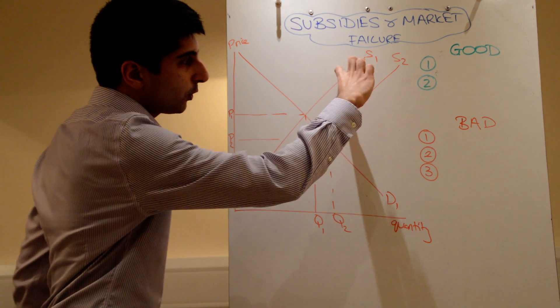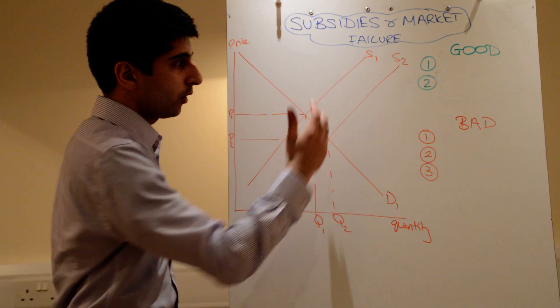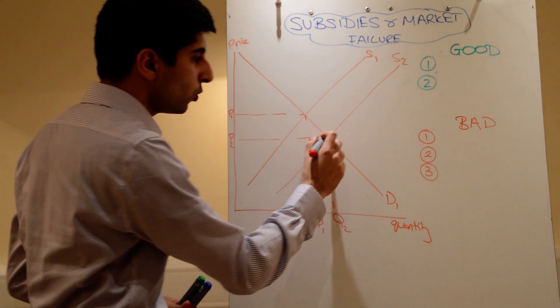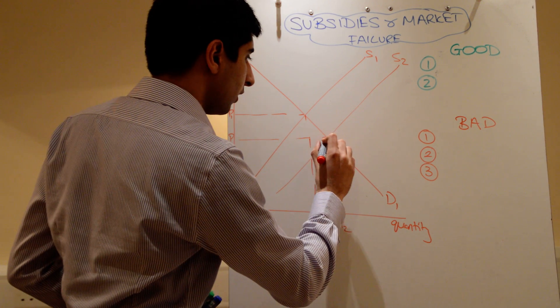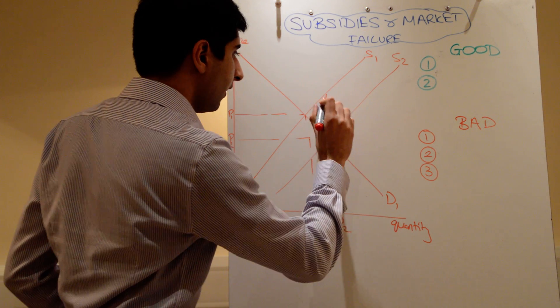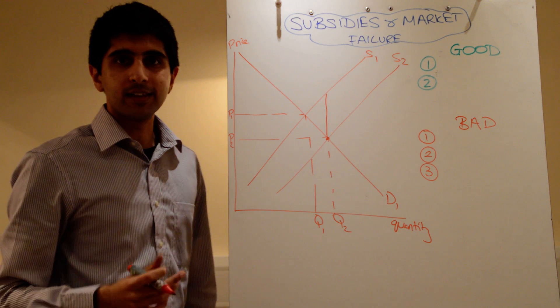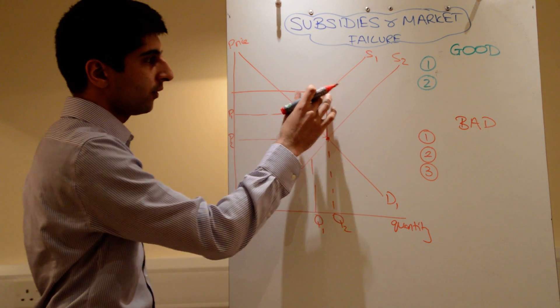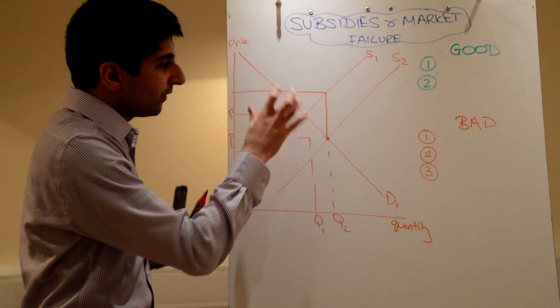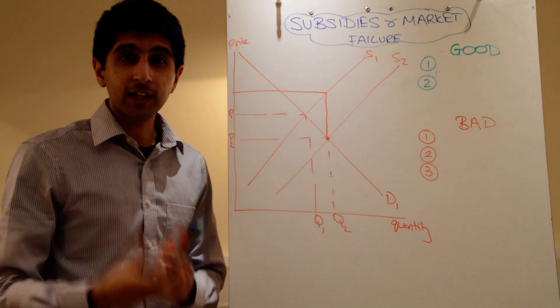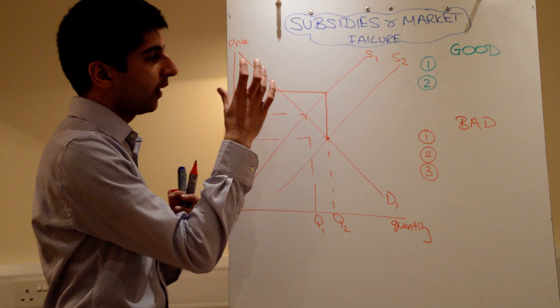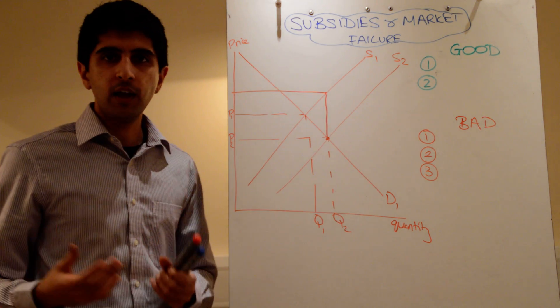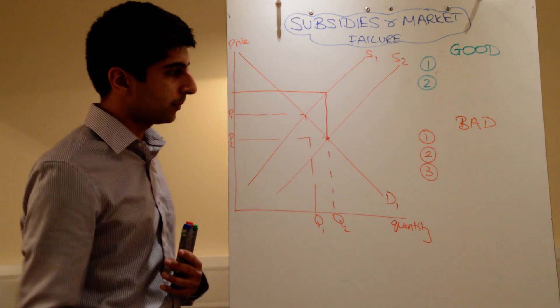And the vertical distance between the two supply curves, wherever that is, the vertical distance tells you the value of the subsidy. So, if you go to the new equilibrium here and do a line vertically upwards, that vertical distance tells you the value of the subsidy times it by the number of units sold, which is why I'm going to line across, gives you the cost, the total cost to the government as a result of imposing the subsidy. So, the value of this rectangle tells you how much it costs the government to implement the subsidy.